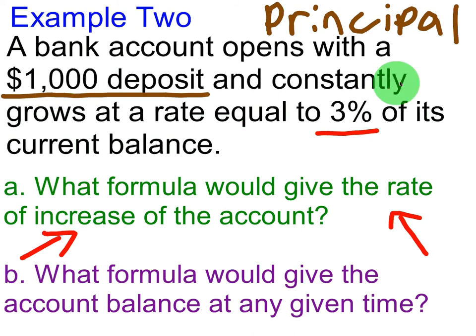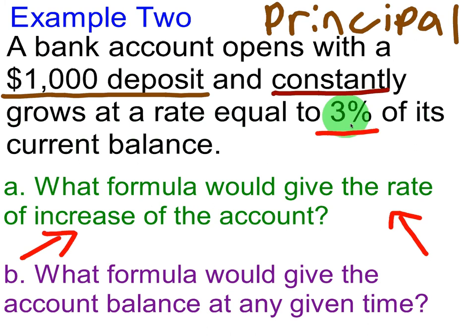It says it constantly grows at a rate of 3% of its current balance. The key word here is 'constant.' This relates to compound interest, which we've shown before. Any proof of exponential growth many times involves compound interest, meaning it's constantly happening, and so at any given point in time the rate of increase is 3% of its current amount.